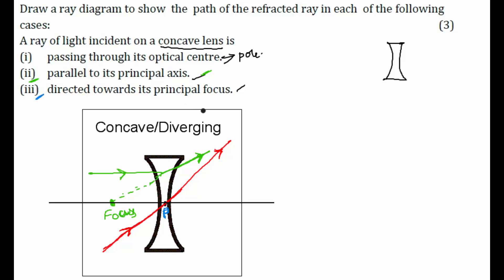Case three: a ray directed towards its principal focus. If the focus is at F, I'm drawing a ray pointing towards the focus — you can see clearly that I'm drawing a line with the ray pointing towards the focus like this. After refraction, how will it go? It will go exactly parallel to the principal axis.